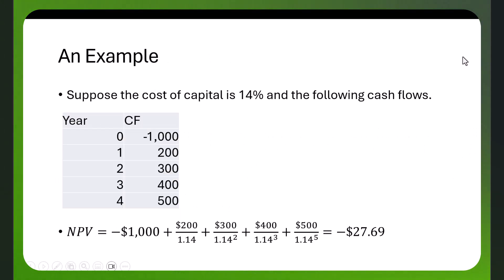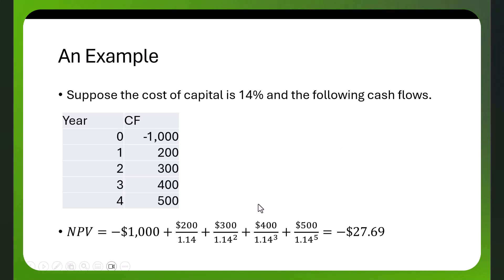Let's take a look at an example. Suppose the cost of capital is 14% and we have the following cash flows: the cost is minus $1,000 and the cash flows are $200, $300, $400, and $500 over a four-year period. If we calculate NPV, we get minus $27.69. The fact that NPV is negative means we should reject this project.